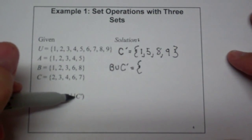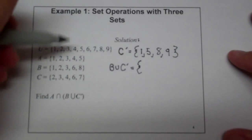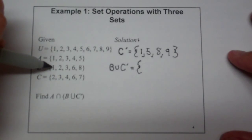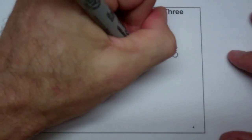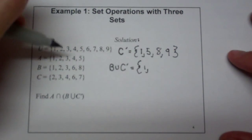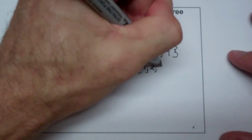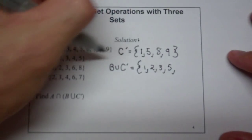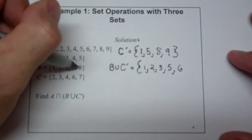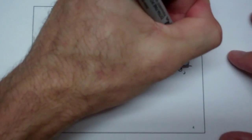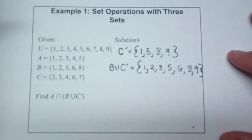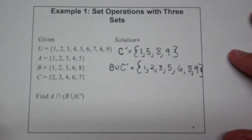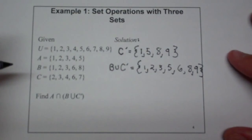The union is typically bigger, so everything that's in B and C complement. So 1 is definitely in there, 2, 3 is definitely in there, 4 is in neither but 5 is, 6 is in there, 8 and 9 are in both. So that is B union C complement, and you can see that the set is bigger, which is what we would expect.